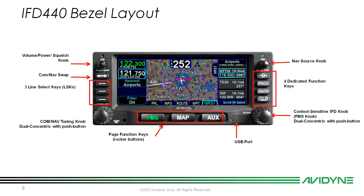The bottom left knob is a dual concentric with push button — our com/nav tuning knob. Turning either knob brings up our frequency nomination page for dialing in megahertz and kilohertz. The page function keys along the bottom are rocker buttons with three positions each — center, left, and right — for accessing different pages and dragging or hiding content. The bottom right is a standard USB port for all database uploads and downloads, and it can also charge devices. The lower right knob is another dual concentric with push button — our context-sensitive FMS knob.